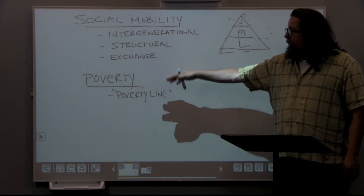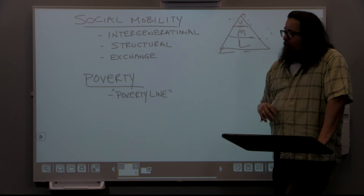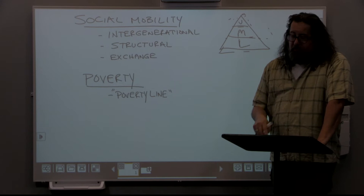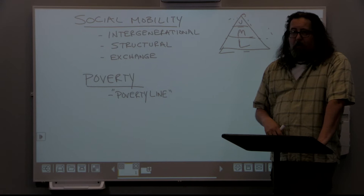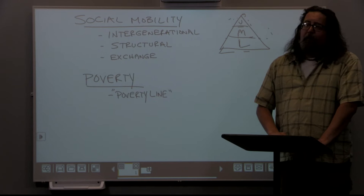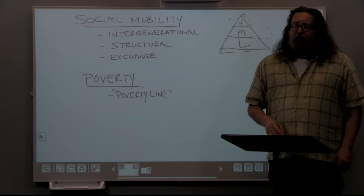We'll revisit exchange mobility when we discuss poverty. When we talk about what poverty is in a society, according to the model we just discussed, the working poor and underclass are about 20% of the U.S. population — about one in every five people could be considered living at or near poverty. There are two types of poverty: absolute poverty and relative poverty.